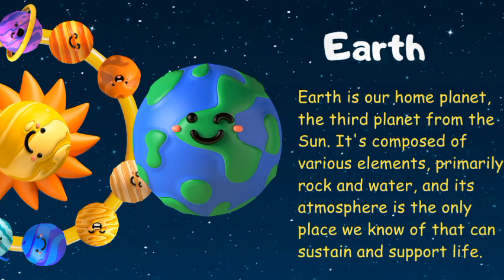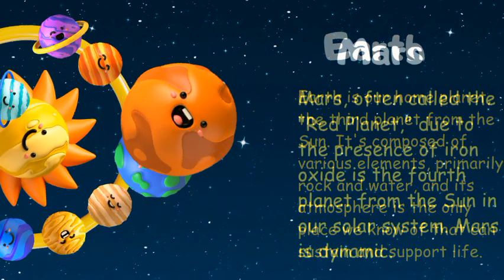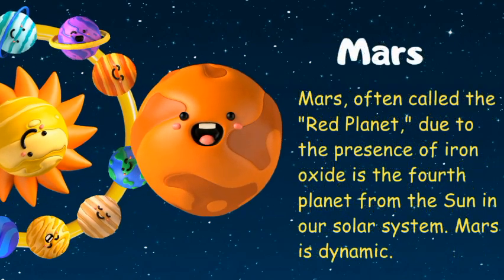Mars, also called the red planet, is often called the red planet due to the presence of iron oxide. It is the fourth planet from the sun in our solar system. Mars is very dynamic.